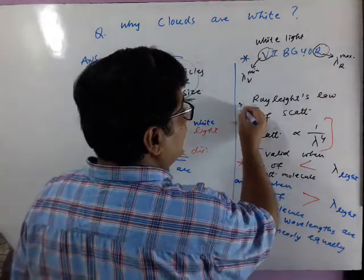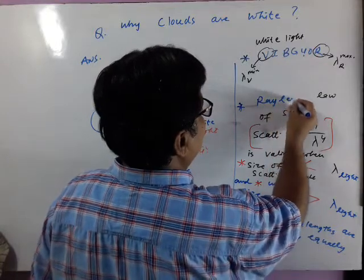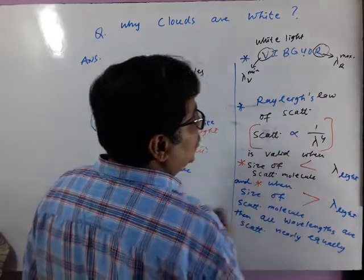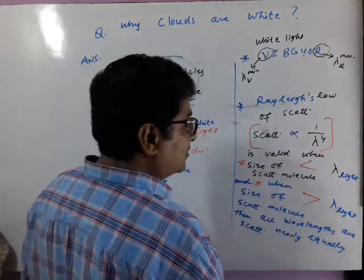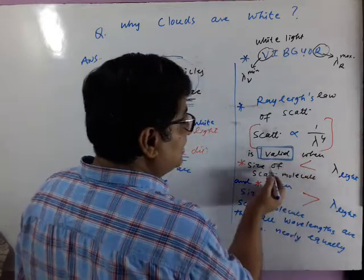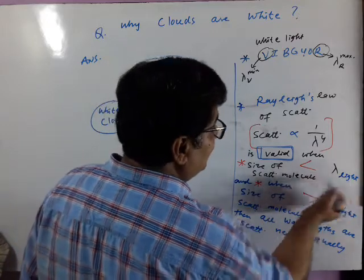As per Rayleigh's law of scattering, scattering is inversely proportional to lambda raised power 4. This law is valid when size of scattering molecule is less than wavelength of the light used.